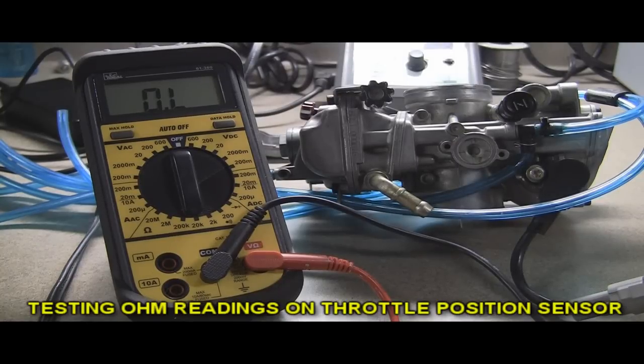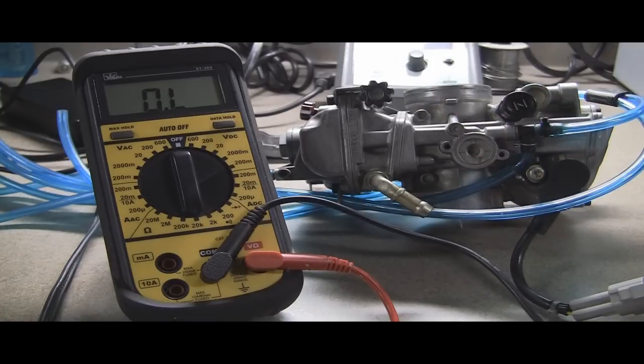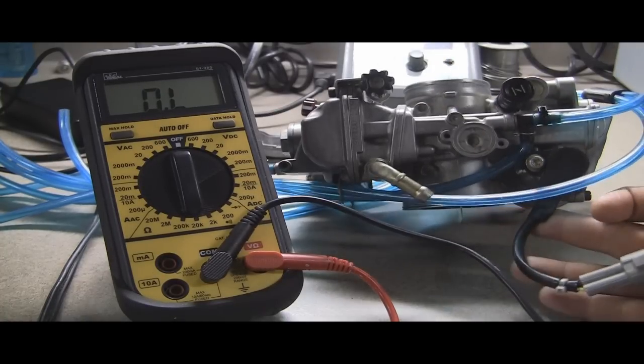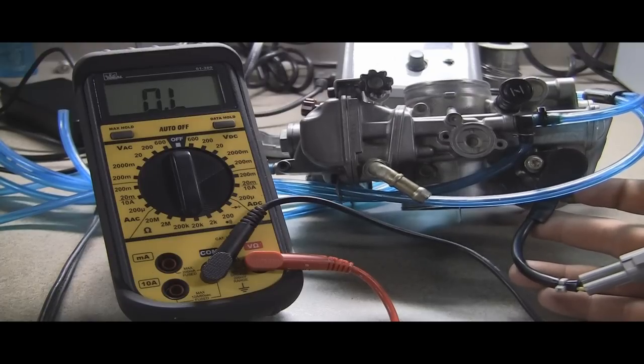In today's video I'm going to show you how to use a multimeter to check ohms, which I've already done in other videos, but this is just another example of things you can use the multimeter for. The other thing you're going to learn is how to check if your throttle position sensor is good or bad.